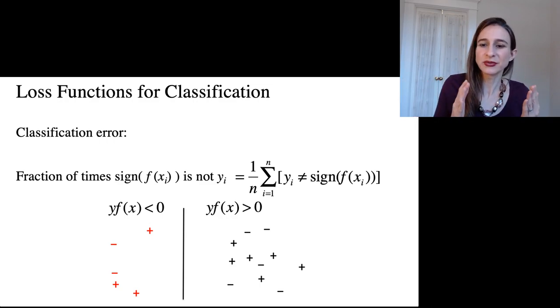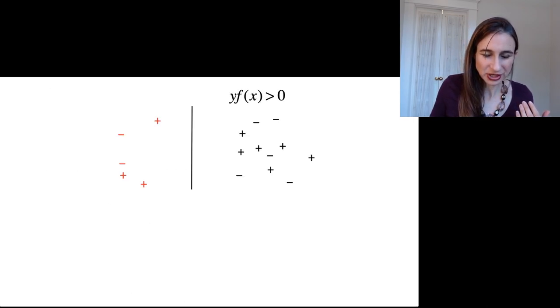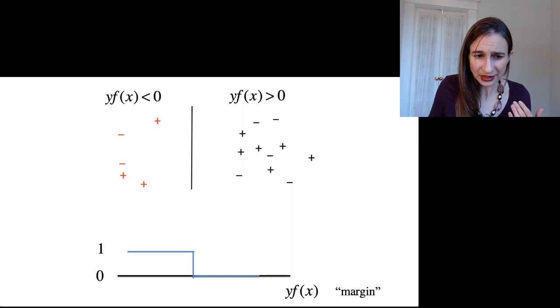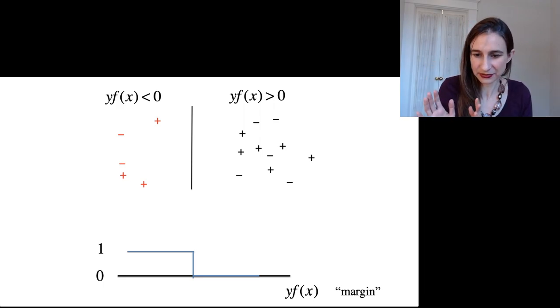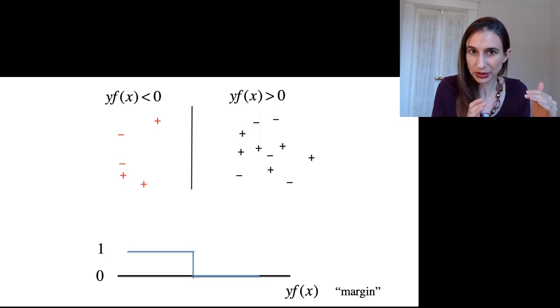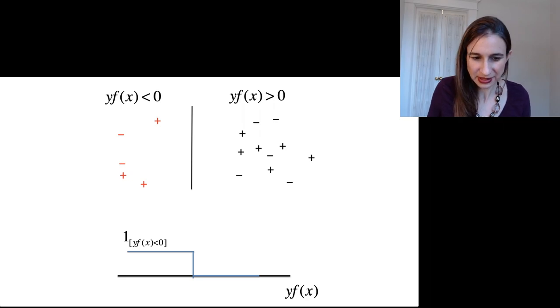And then the distance from the decision boundary is meaningful here. That's sort of confidence in the prediction. So just to remind you, all the points on the left are misclassified. All the points on the right are correctly classified. So we lose a point if we're misclassified. We don't lose a point if we're correctly classified. But there's more subtlety to it. So again, this is the function y times f is less than zero.